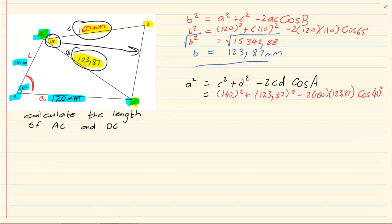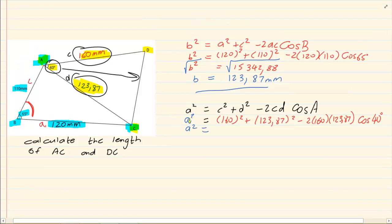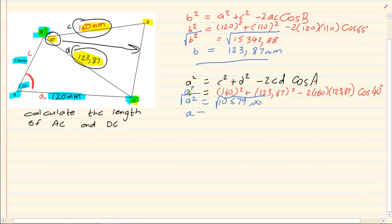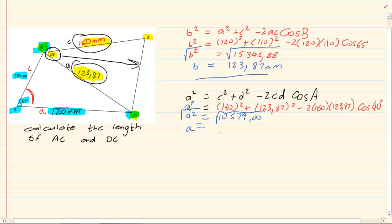So we simply substitute, then we press it into our calculator. Remembering that we are solving for A squared. Now A squared gives us 10,579.00. But I want A. So I square root the answer. And that gives me A is equal to 102.85. Again, it's millimeters because they had specified in the question what measurement I am using. Thank you for watching.